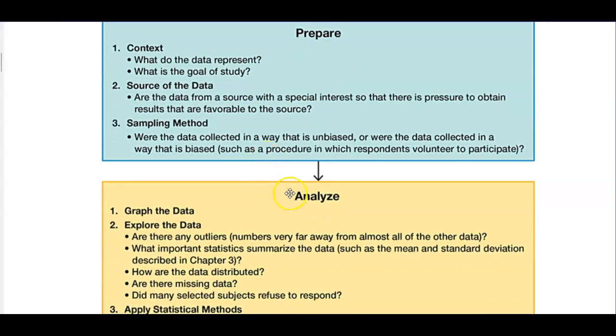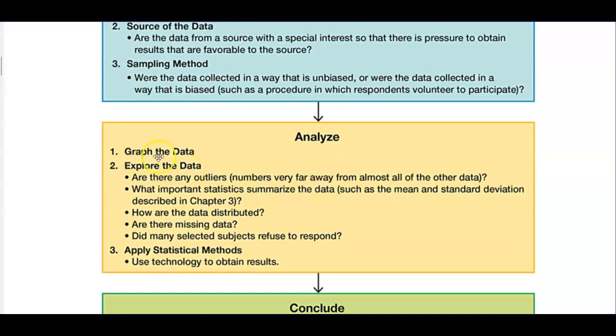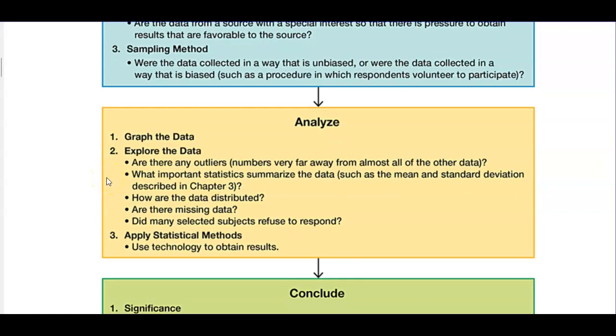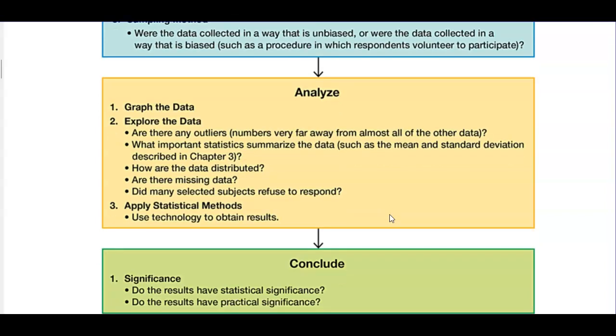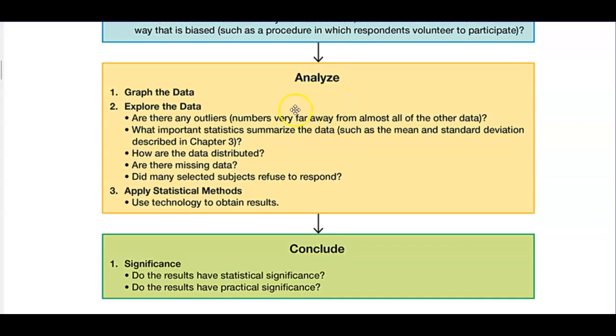Once we prepare, now we need to analyze. Once we get the data, we would then graph the data. Number two, then we're going to explore the data. We want to ask ourselves, are there any outliers, which are numbers very far away from almost all of the other data? What important statistics summarize the data, such as the mean and standard deviation? How are the data distributed? Are there missing data? Did many selected subjects refuse to respond? Then you apply statistical methods. You can use technology to obtain these results.